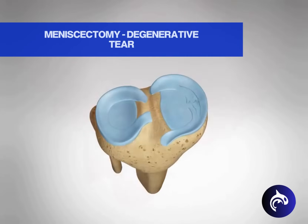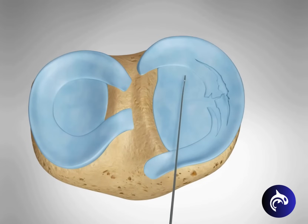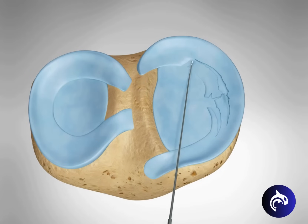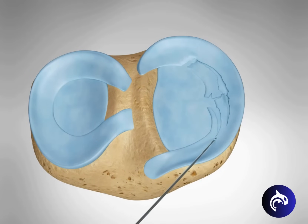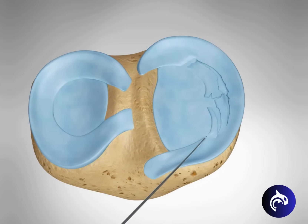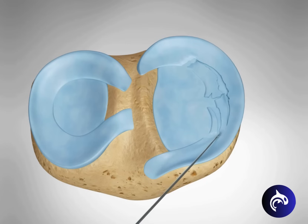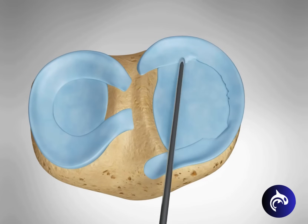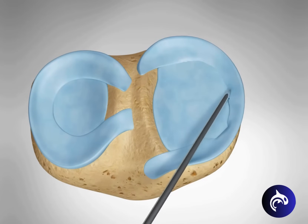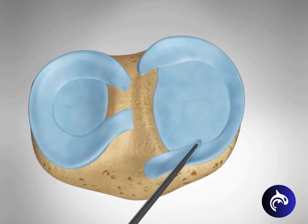Meniscectomies are typically performed using arthroscopy, a minimally invasive surgical technique. Surgeons make small incisions and use an arthroscope to visualize and access the knee joint, reducing recovery time and scarring compared to open surgery.